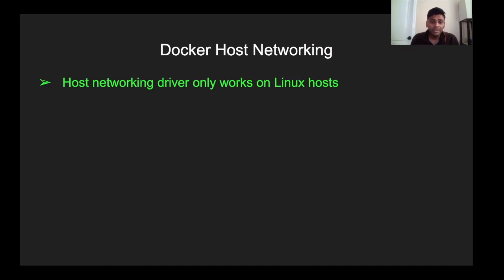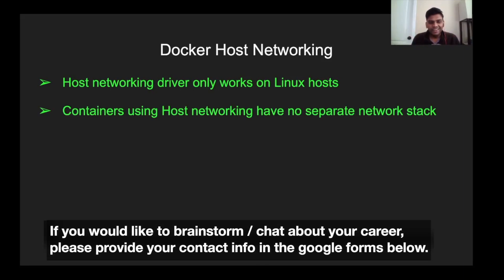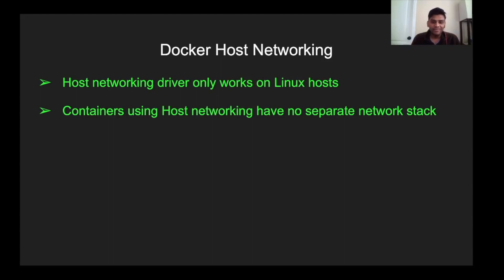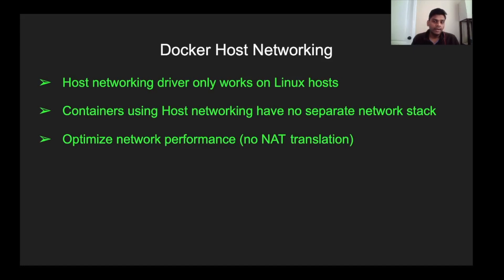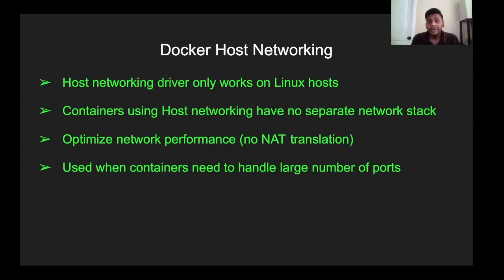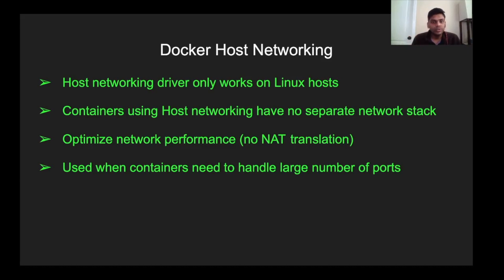Docker host networking configuration is available only on Linux hosts — it's not available on Windows or Windows Server containers. Using host networking, a container will not get its own private IP space. Docker host networking is mainly used when you need to optimize your network performance between applications and between containers, and when your containers need to handle a large number of ports. With host networking there is no need for network address translation.